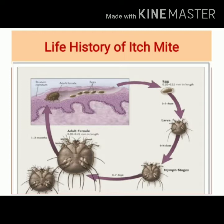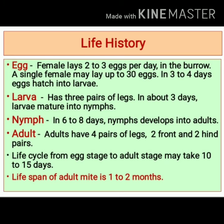There are four stages in the life history of an itch mite. These stages include egg, larva, nymph, and adult. The first stage in the life history of the itch mite is the egg stage.